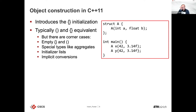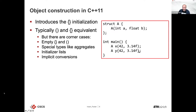In C++11 we can construct objects with curly braces or with parentheses. Before C++11 you had your class A with a constructor taking an integer and a float, and you'd construct it using parentheses. In C++11 you can use curly braces for doing that, and most of the time it is the same — you can do both — but in some cases there are differences.